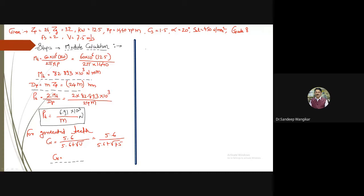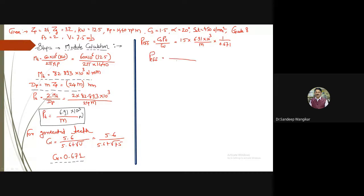Calculating Cv gives approximately 0.671. Then the effective load P_eff = (Cs × Pt) / Cv = (1.5 × 6.921 × 10³ / m) / 0.671, giving P_eff = 15.44 × 10³ / m Newton.